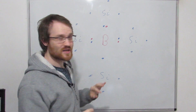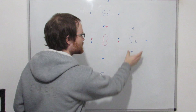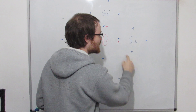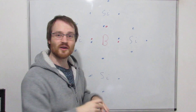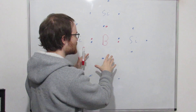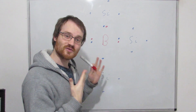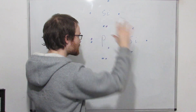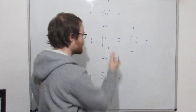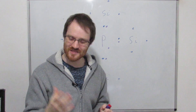Silicon atoms and these impurity atoms of phosphorus or boron are all neutrally charged. Silicon has the same number of positively charged protons as it has negatively charged electrons, and so does boron and so does phosphorus. Just because we've got this gap doesn't mean we've got any excess positive charge, and just because we have this extra electron doesn't mean that this overall is negatively charged.